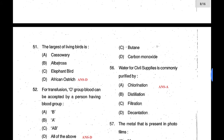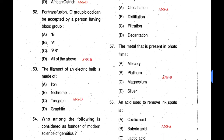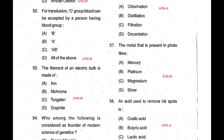Question 51: The largest of living birds — answer is D, that is the African Ostrich. Question 52: For transfusion, O group blood can be accepted by a person having which blood group? O group is known as the universal donor, so it can be accepted by anyone. Answer is 'all of the above.' Question 53: The filament of an electric bulb is made of tungsten.